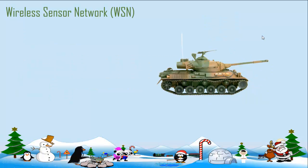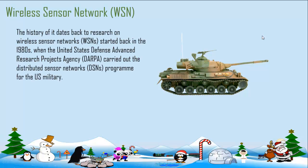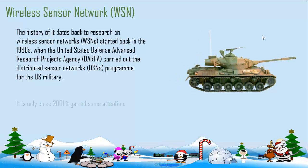When wireless sensor networks were in their infancy, they were meant only for military purposes. No one ever thought they would become part of our daily lives with wide applications. For the first time, WSN was used by the United States Defense Advanced Research Projects Agency, DARPA, in the 1980s. At that time it was called Distributed Sensor Networks.